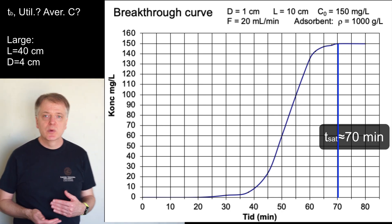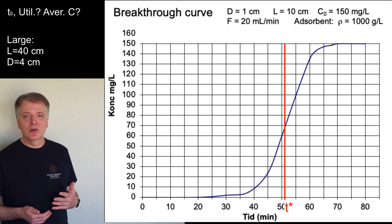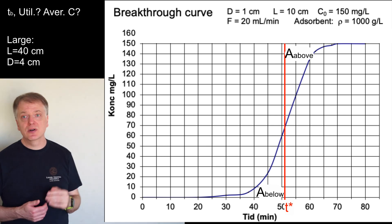To find T star we draw a vertical line such that the area below the breakthrough curve to the left of T star equals the area above the breakthrough curve to the right of T star.